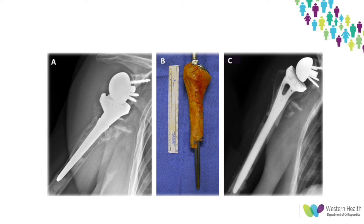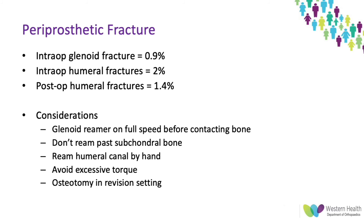Moving on to periprosthetic fracture — glenoid fractures intraoperatively are extremely low in incidence, but humeral fractures are definitely higher, especially at the time of revision. To reduce the chance of glenoid fracture, make sure the reamer is at full speed before contacting bone to avoid grabbing and creating torque. Don't ream past the subchondral bone down to the soft metaphyseal bone, always ream the humeral canal by hand, and in a revision setting consider an osteotomy to reduce the chance of splitting the humerus.